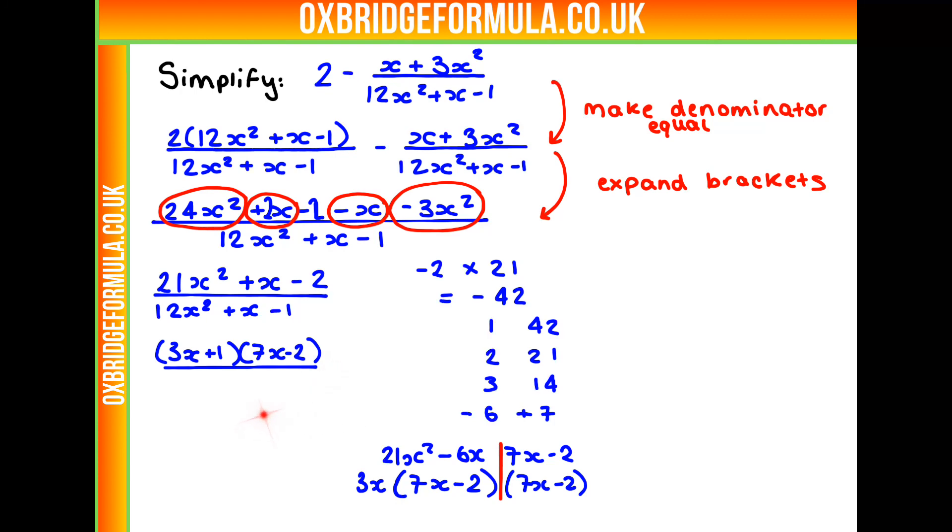So let's do exactly the same for the denominator. We're going to multiply our minus 1 by 12, and that gives us minus 12. And again, we're going to find two factors that add together to make x. So 1 and 12, no. 2 and 6, no. But 3 and 4 do. So minus 3 plus 4 equals x. And if we multiply them together, we make minus 12.